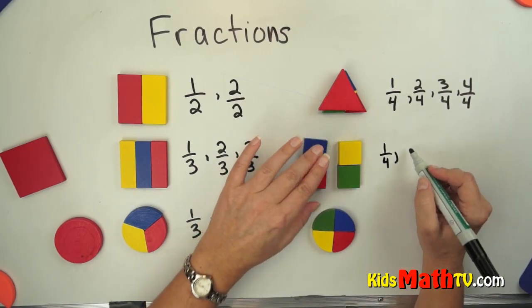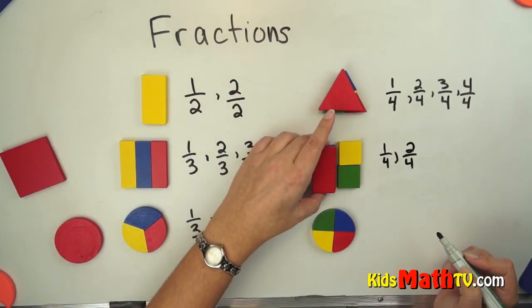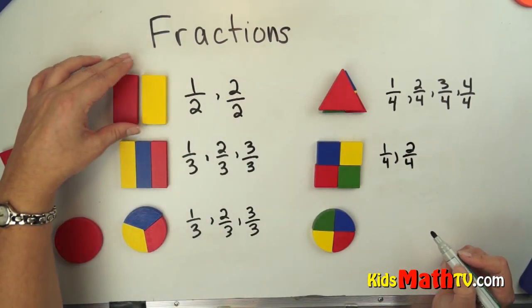We can have two out of four. And if you notice, two out of four is actually the same thing as one half. Kind of interesting.